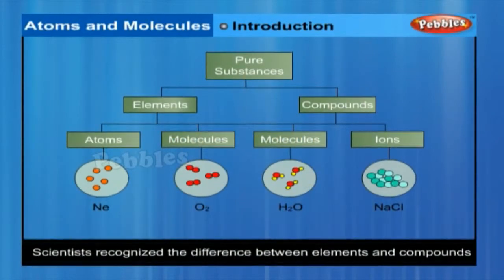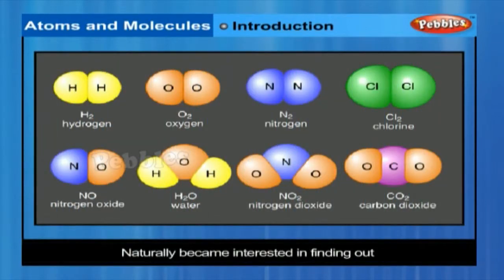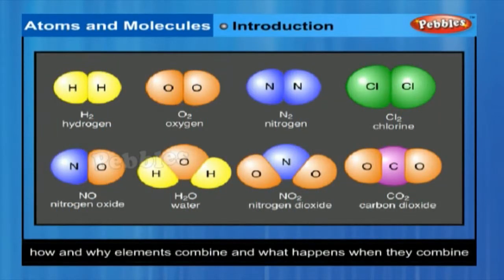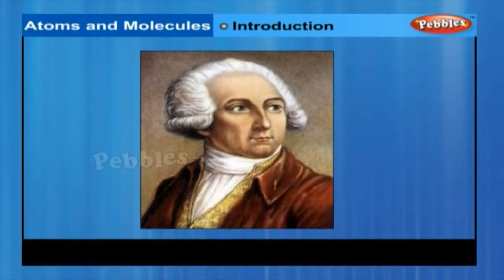Scientists recognized the difference between elements and compounds and naturally became interested in finding out how and why elements combine, and what happens when they combine. Antoine L. Lavoisier laid the foundation of chemical science by establishing two important laws of chemical combination.